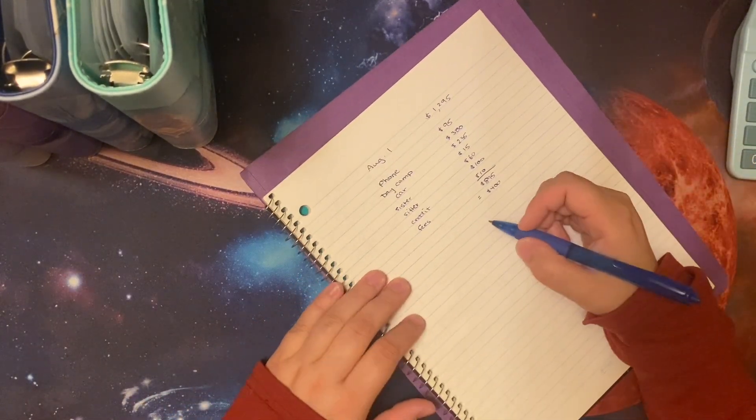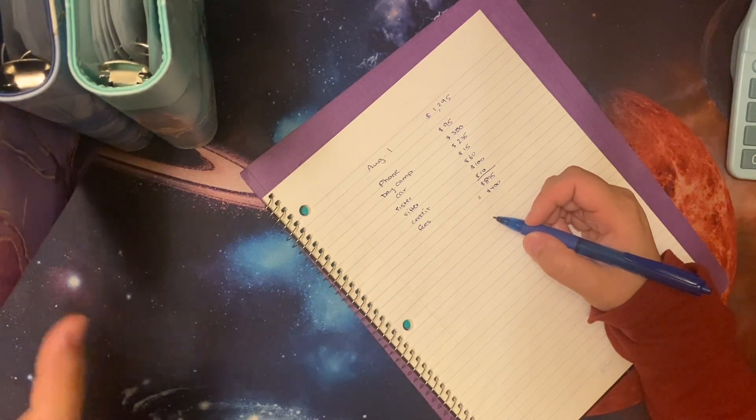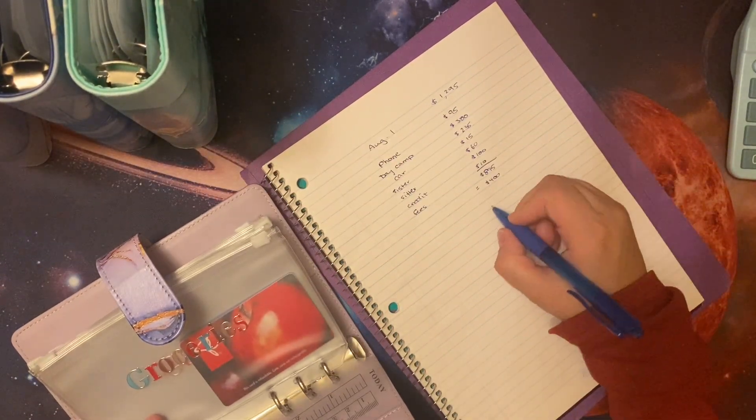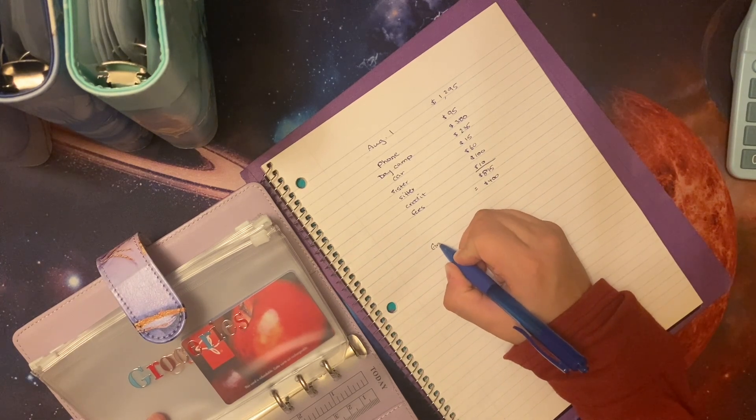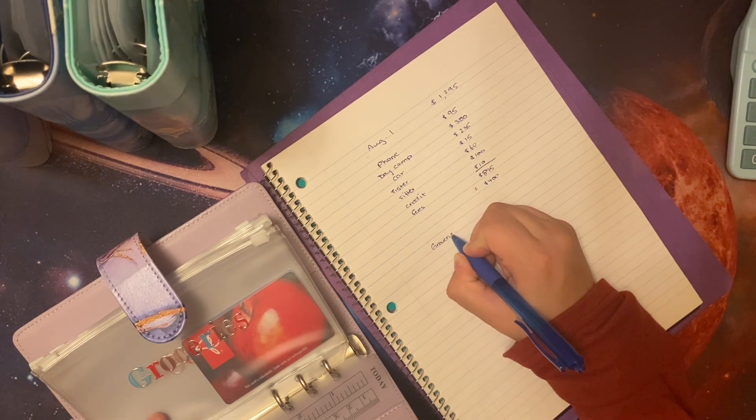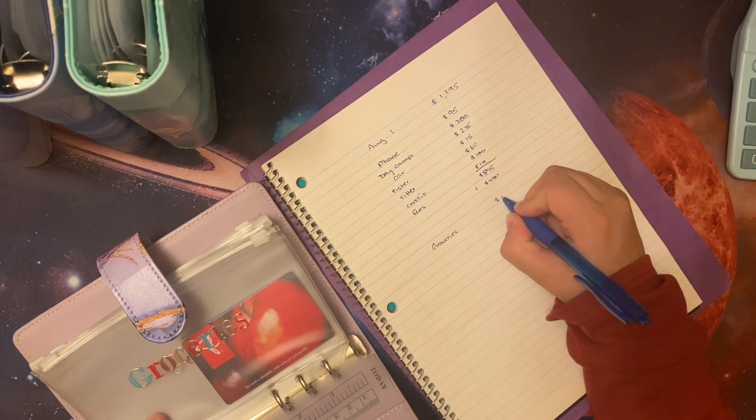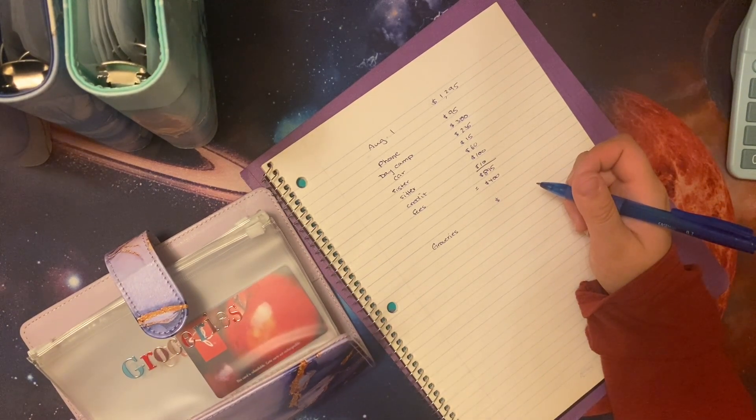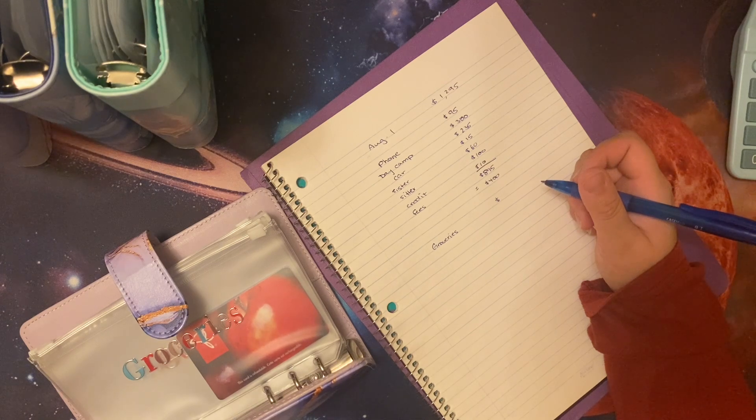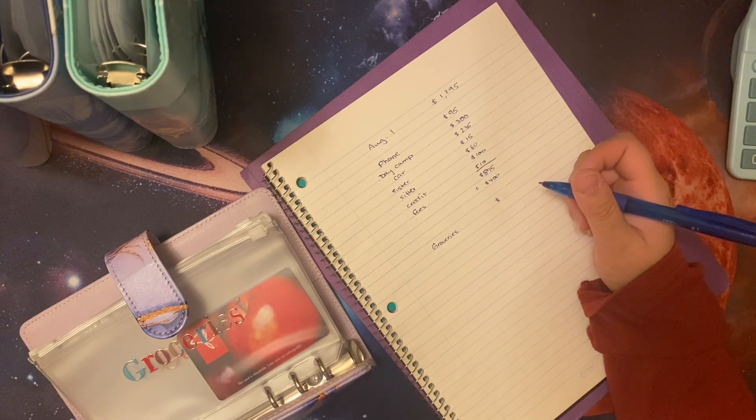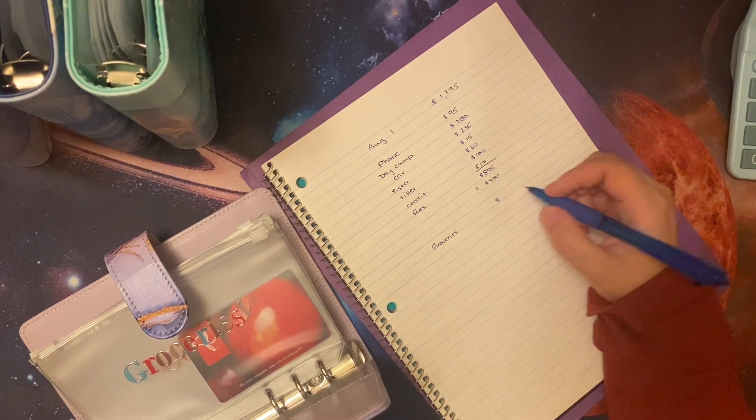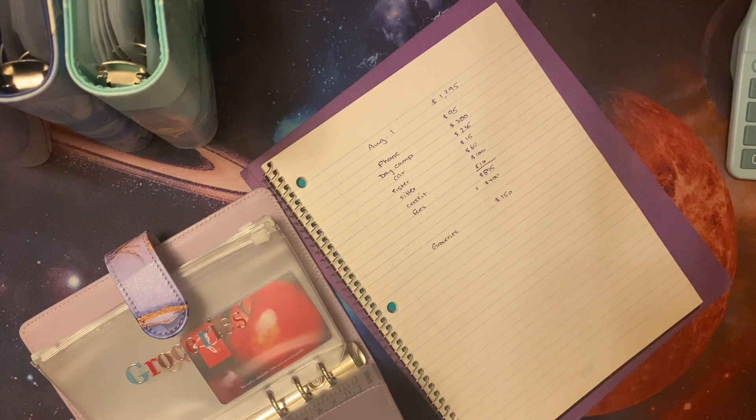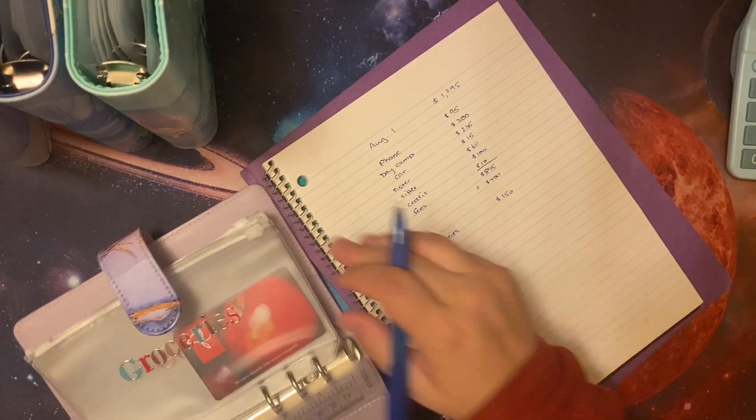All right. So now our essentials. So if we go in here, we can look and see. So groceries, we're not like out of everything. I think we mostly just need like produce, maybe a couple boxes of goodies. So we'll say 150 like usual.